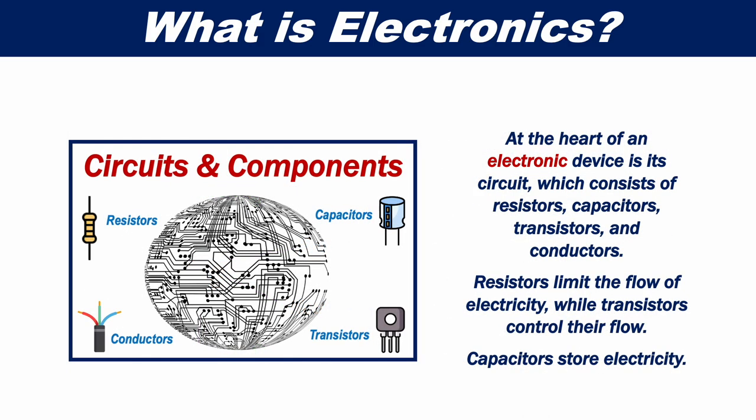Electronic devices are machines that use electrical circuits to process information and carry out hundreds of different tasks. Examples of tasks include encoding, analyzing or transmitting information. At the heart of an electronic device is its circuit, which consists of resistors, capacitors, transistors and conductors. Resistors limit the flow of electricity, while transistors control their flow. Capacitors store electricity.